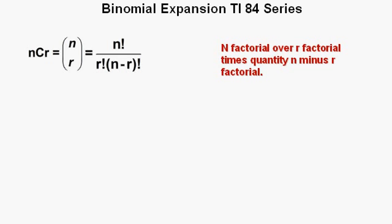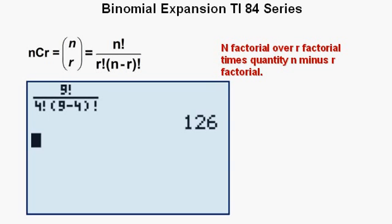Also, there's a formula to find the coefficient for any term. It's N factorial over R factorial times quantity N minus R factorial. And while I won't show you how to do the keystrokes here, here is the formula entered into the calculator. For our first problem, the 5th term of binomial to the 9th power, we get 126, just as we found earlier.